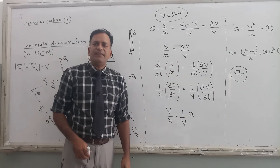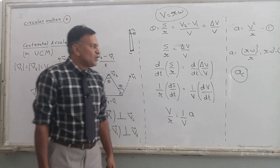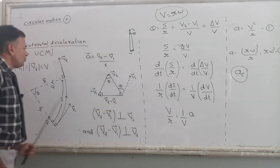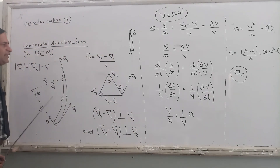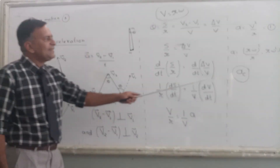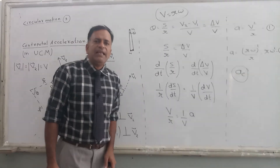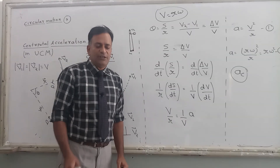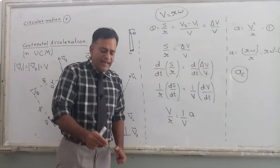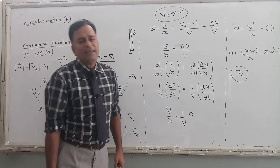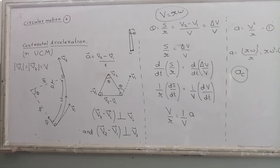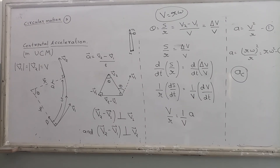Both expressions — a equals v squared upon r and a equals r omega squared — can be used to find the magnitude of this acceleration. Because it is always directed towards the center it is known as centripetal acceleration. In the next video I am going to discuss centripetal and centrifugal accelerations.